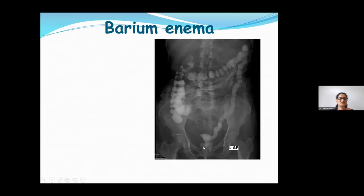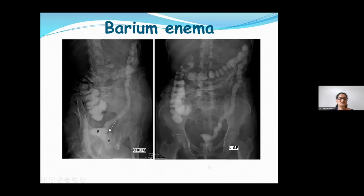Here is a barium enema in a known case of carcinoma of the rectum. We can see barium inside the rectum and cecum, and something outside the rectal contour. In an oblique view, we can very clearly see the communication between the rectum and vagina — a clear-cut rectovaginal fistula. But we don't know what is happening beyond the lumen, so we need cross-sectional imaging.